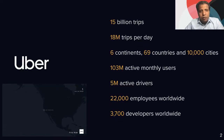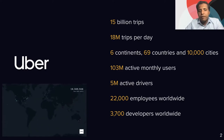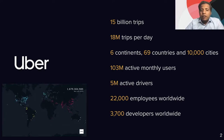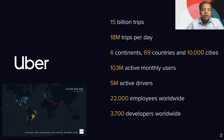Let's have a little bit of context about Uber. Uber is a company with 18 million trips per day. We have six continents, 69 countries, and 10,000 cities. We actually have 103 million active monthly users, around 5 million active drivers, 22,000 employees worldwide, and 3,700 engineers worldwide.